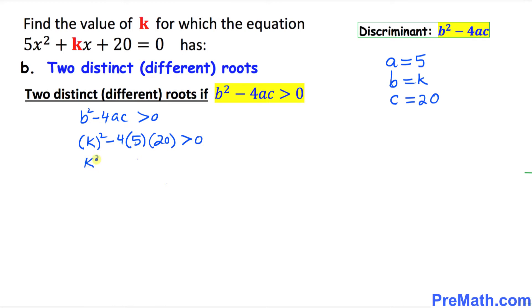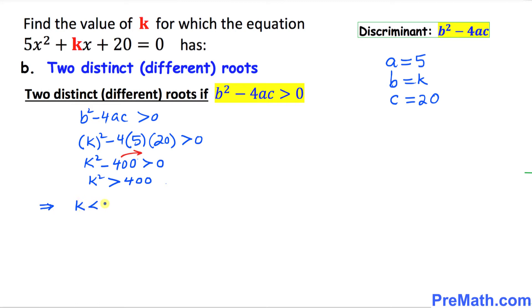Simplifying, k squared minus 400 is greater than 0. Moving negative 400 to the other side gives k squared is greater than 400. In this case, with a greater-than inequality, this can be written as k is less than negative 20 or k is greater than 20.